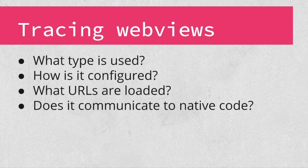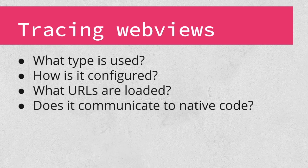When examining an application's web views, consider the following points. First, try to identify what type of web views are used, paying attention to whether the type used is appropriate for the context. Second, examine how the web view is configured — for instance, if JavaScript is enabled, does the application actually need it? Third, monitor the web view while using the app to see what URLs are loaded and what JavaScript is executed, if any. Finally, consider whether the web view communicates with native code, which may be done using JavaScript callbacks or messaging facilities provided by the web view class.